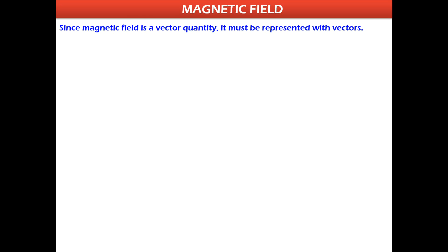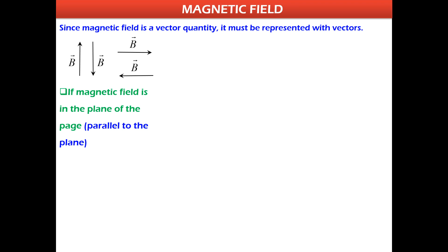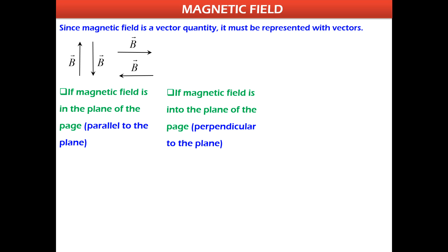Since magnetic field is a vector quantity, it must be represented with vectors. If the magnetic field points up, draw the vector upward; if down, draw it downward; if right or left, draw it accordingly — these are all in the plane of the page. But if the magnetic field lines are perpendicular to the plane, going into the page, you model it like an arrow moving away from you. You see the back of the arrow, which appears as a cross. Therefore, we show a magnetic field vector going into the page as crosses (×).